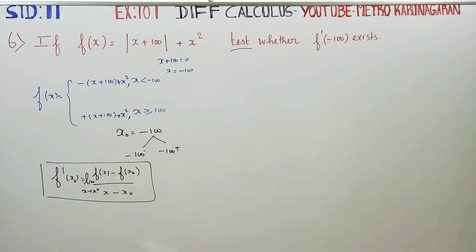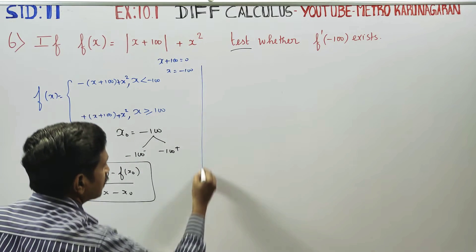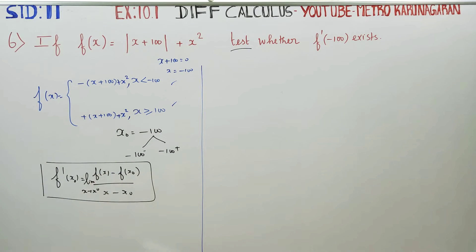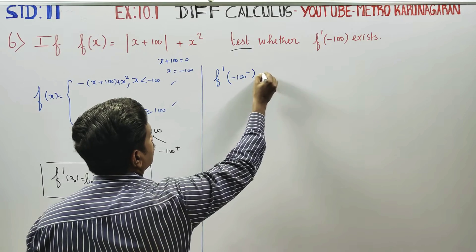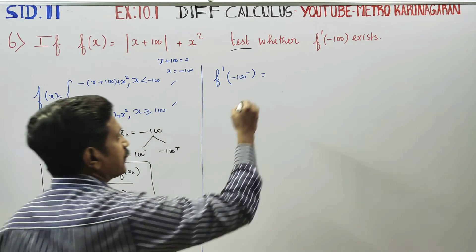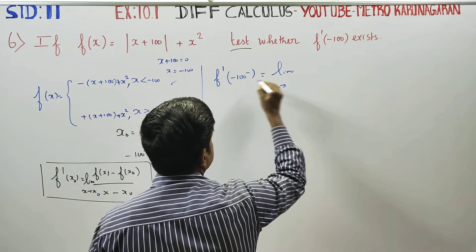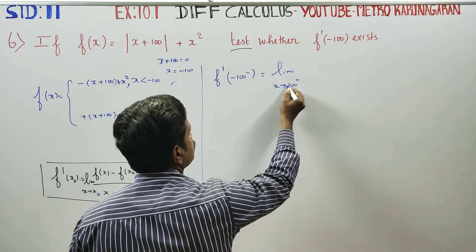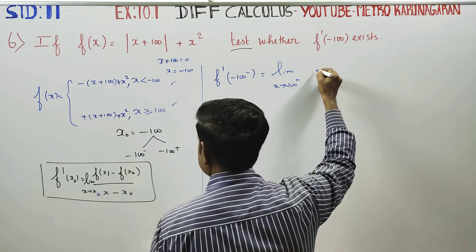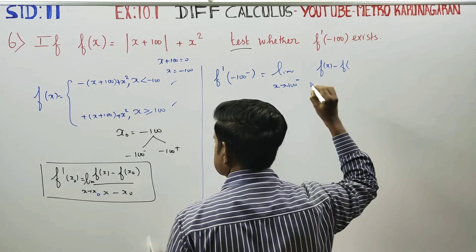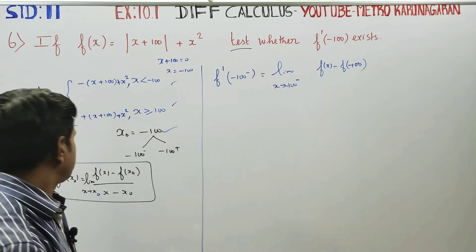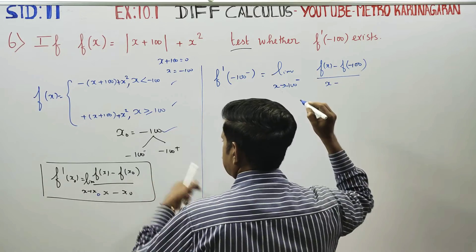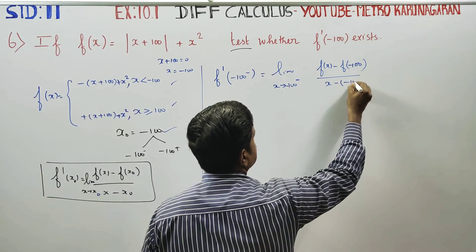First, I am going to find the left-hand derivative. We redefine the function and recall the formula. This is x0 equal to minus 100. The left-hand side derivative is the limit as x approaches minus 100 from the left. So f'(-100) from the left equals the limit as x tends to minus 100 minus of f(x) minus f(minus 100), divided by x minus minus 100.